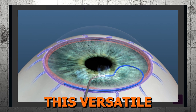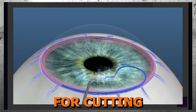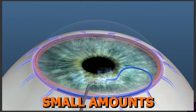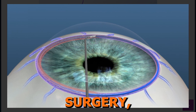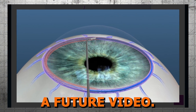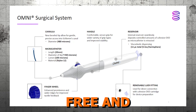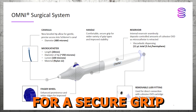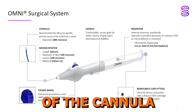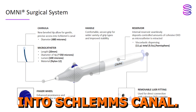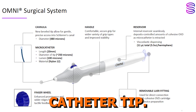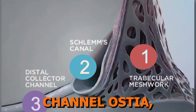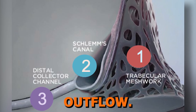Finally, we have the Omni surgical system. This versatile device is indicated for cutting trabecular meshwork tissue during trabeculotomy procedures, as well as delivering small amounts of viscoelastic fluid during ophthalmic surgery. The Omni system is implant-free and tissue-sparing, a single-use device with an ergonomic handle for a secure grip and a finger wheel that allows for the advancement of the cannula into Schlemm's canal after piercing the TM with a microcatheter tip. It targets the trabecular meshwork, Schlemm's canal, and collector channel ostia, breaking up microadhesions to improve outflow.